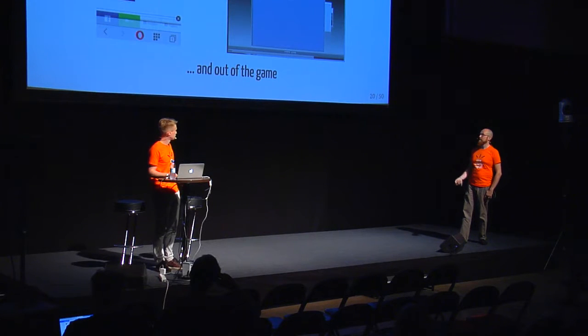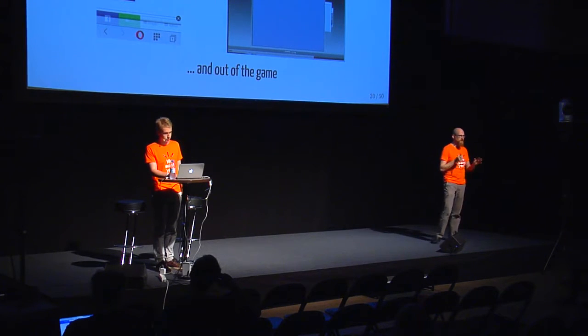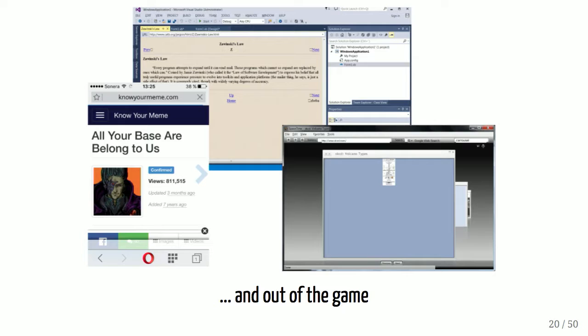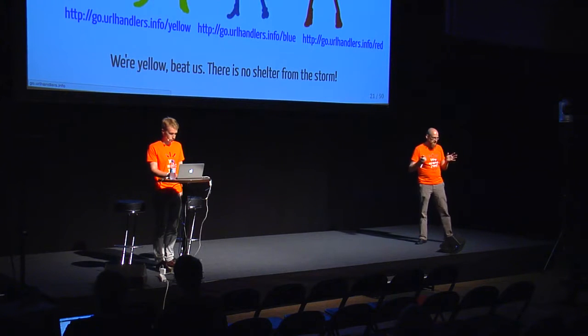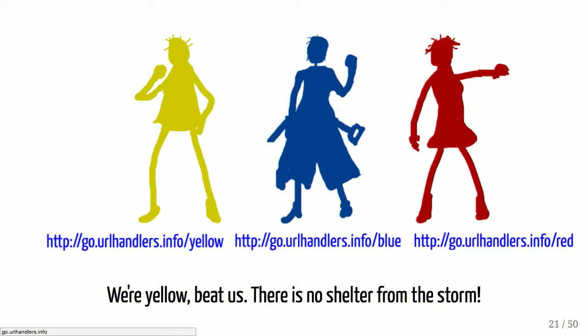We can't figure it all out ourselves. In your pockets you have all these browsers — in phones, in phone applications, in news applications, in development tools. This is an example of Visual Studio, which has an inbuilt browser for help pages. This is also a prototype 3D Internet from 2008. So here's the deal: we have three teams. We are yellow ourselves. Pick a team, any team, take this URL, share it with everyone, click it with everything that is clickable. We are hoping that you will beat us.